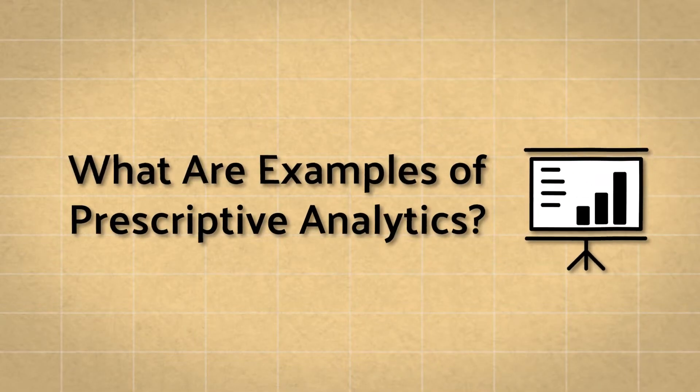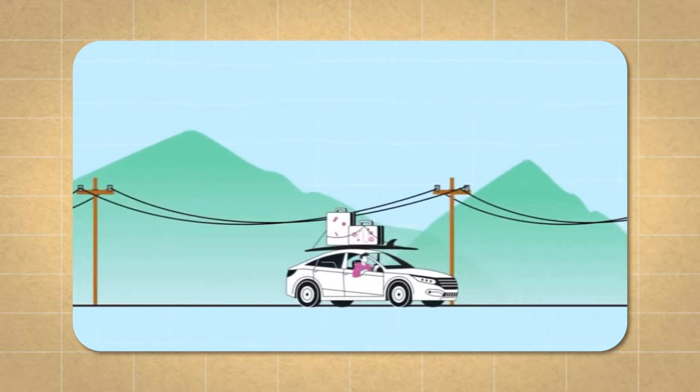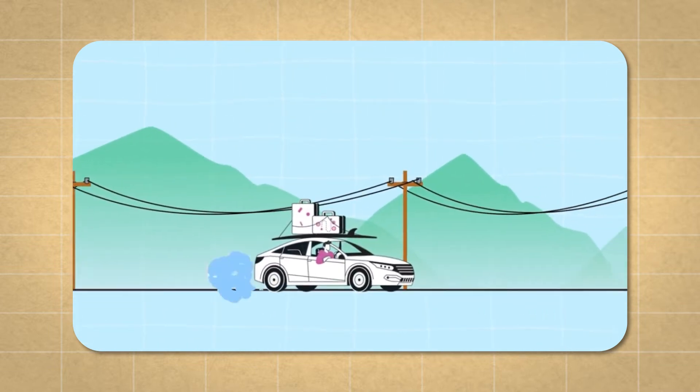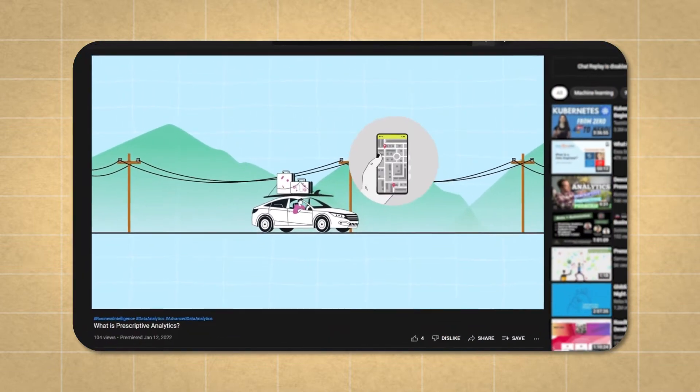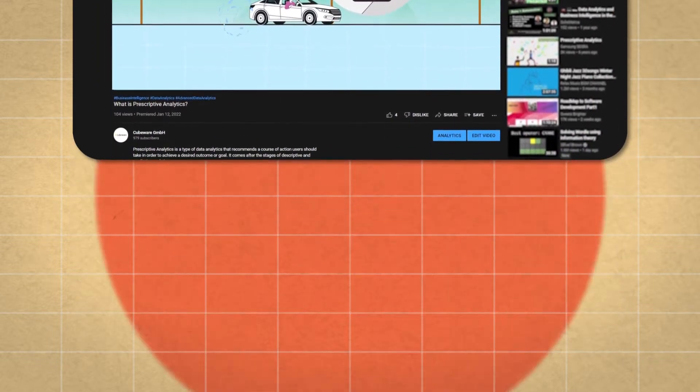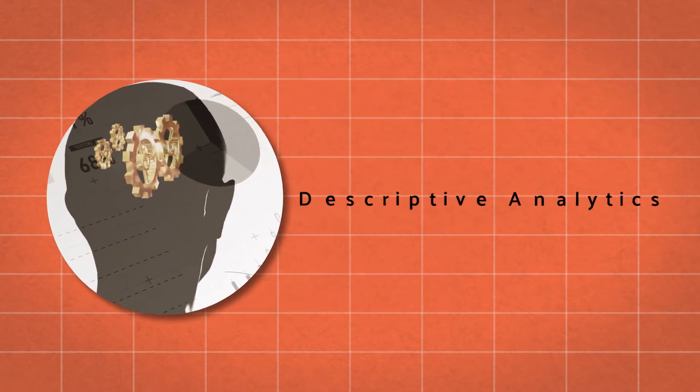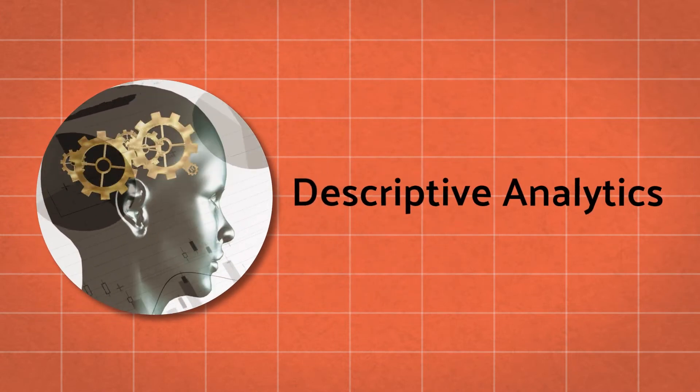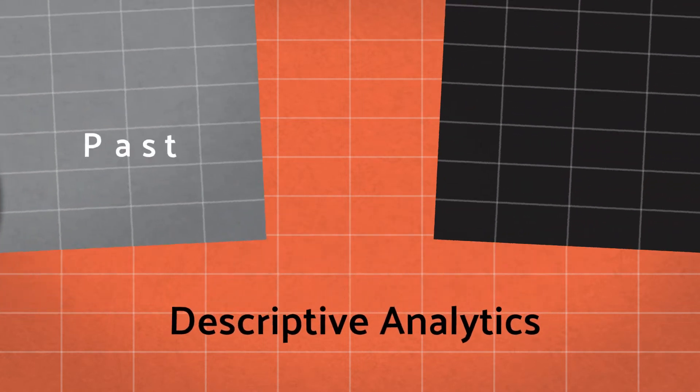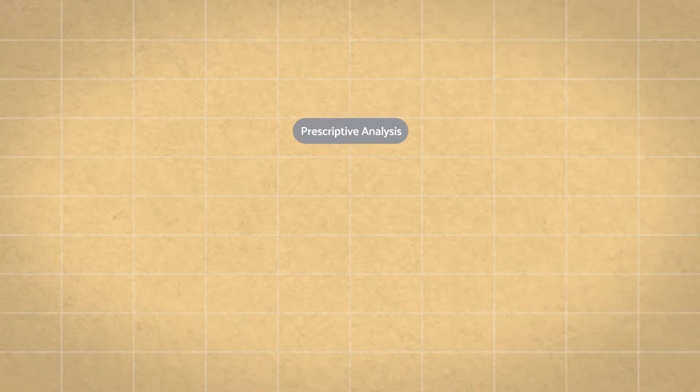What are examples of prescriptive analytics? In our previous video, we discussed what prescriptive analytics is and how it works. To check it out, click on the link in the caption below. When it comes to decision-making, most companies usually rely on descriptive analytics, which is a post-mortem method of examining past and present data sets.